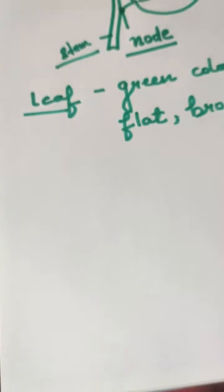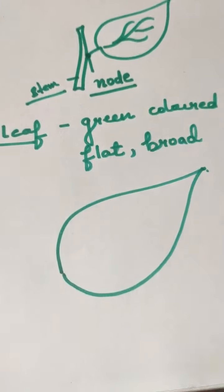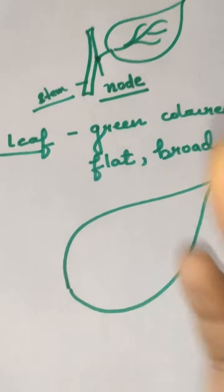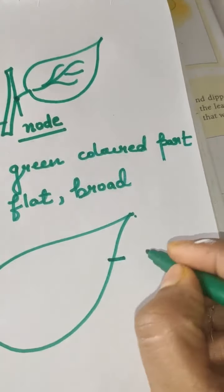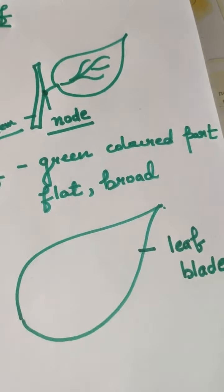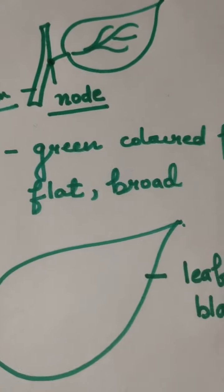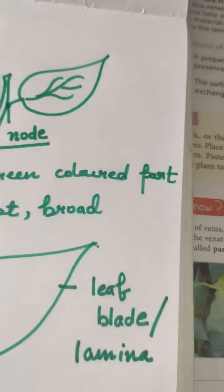In standard 3, we all discussed the structure of leaf. Generally we draw this type of leaf. This is the flat portion of the leaf, and this flat portion is expanded upright towards the sunlight. This area which is flat in shape is known as leaf blade, or leaf lamina. The flat portion of the leaf is known as leaf blade or lamina.